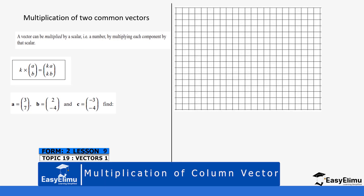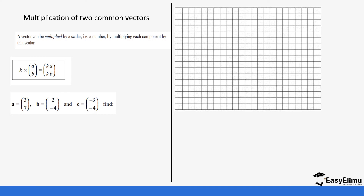Let's take an example. You have been given a = (3, 7), b = (2, -4), and c = (-3, -4). You have been told to find 2a and represent it on the plane. So 2a: the value 2 is a scalar, and our a is (3, 7). We multiply 2 with each unit — 2 times 3 and 2 times 7 — giving us (6, 14). So this is our vector.